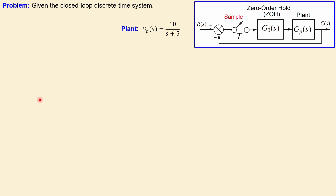Let's look at our problem. In this case we have the closed-loop discrete time system given, which is shown here. The plant is given by 10 over (s + 5), so we have a pole at s = -5, a first order system. It is sampled by a specific sample period and the zero-order hold is there to hold that sampled signal. This is a unity gain feedback configuration.